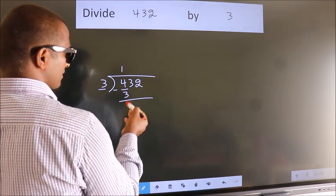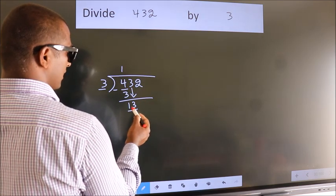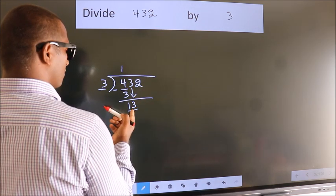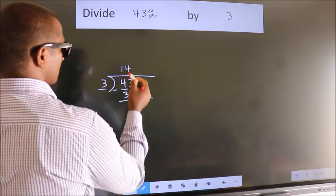After this, bring down the beside number. So, 3 down. So, 13. A number close to 13 in 3 table is 3 fours, 12.